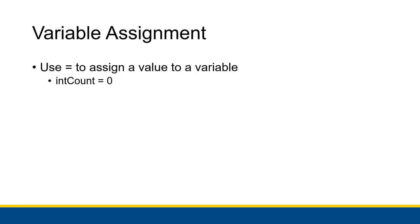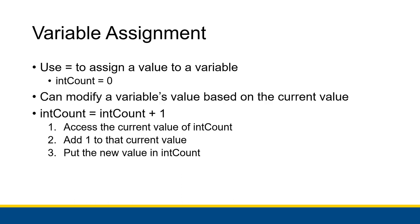We're already familiar with variable assignment where we use the equal sign to assign a value to a variable, whether that's after declaration like with int count equals zero, or at the time of declaration. Now, a helpful thing we can do with a variable is modify its value based on what it currently is holding — we're using its own value to modify what it's holding.